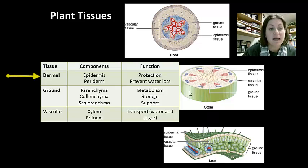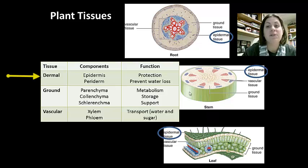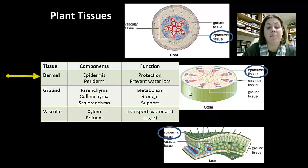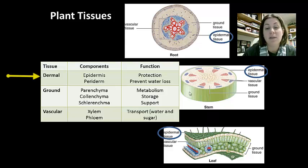First, the dermal tissue is composed of the epidermis and the periderm. It is the outermost layer of the plant, and its function is protection — it also helps prevent water loss, especially in the leaves.